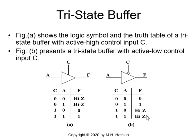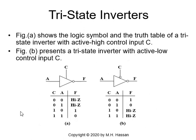Sometimes we need to invert the data, so F will be the complement of data A. To do that, we use Tri-State Inverters, which have many applications. In figure A, the logic symbol and truth table show a Tri-State Inverter with active high control. If C is zero, F will be high impedance. But if C is one, F will be the complement of A — if A is zero, F will be one; if A is one, F will be zero.